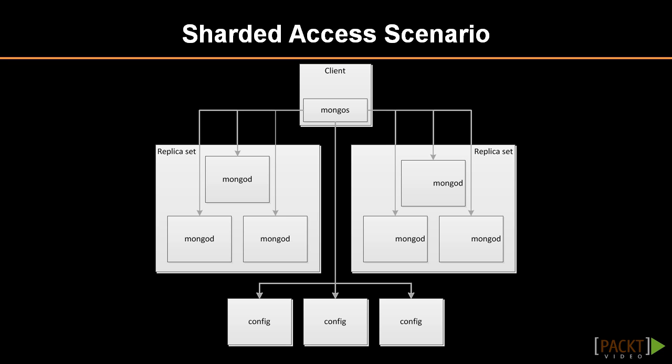A shard key is a field of a document used to partition the data. For example, if a collection held documents representing people and the last name field was chosen as the shard key, MongoDB would use the last name field to distribute the data. Keep in mind that if many last names start with A and C, sharding would not split in the middle of the alphabet — it would split in the middle of the data. It's very important to choose a shard key likely to result in a distribution of queries among shards.